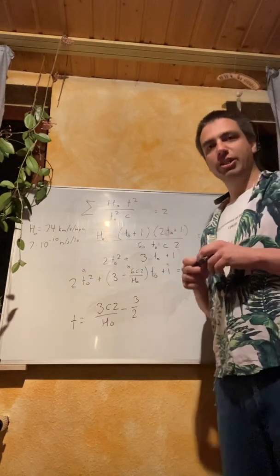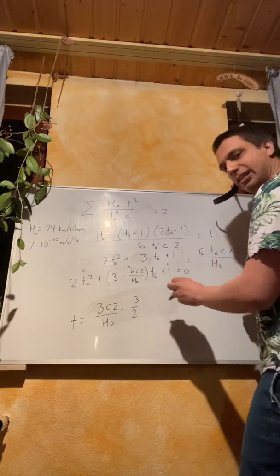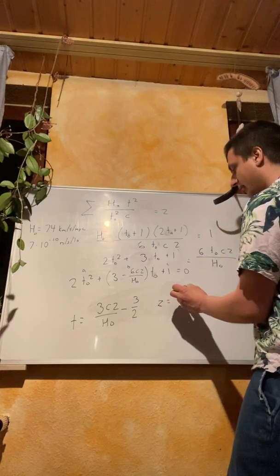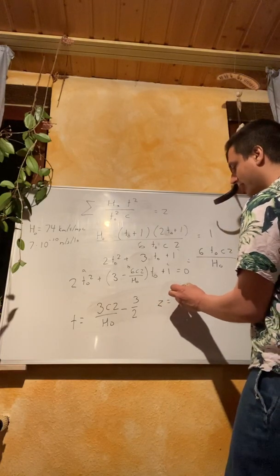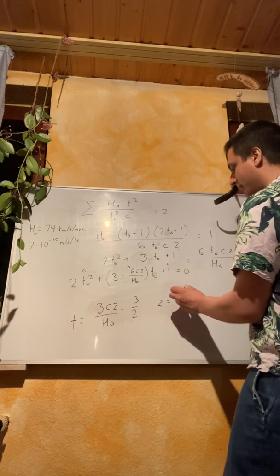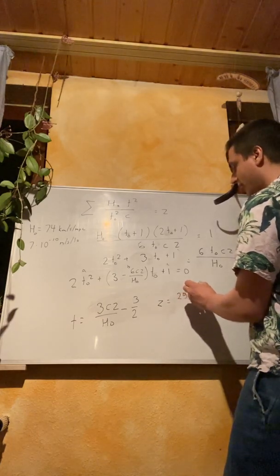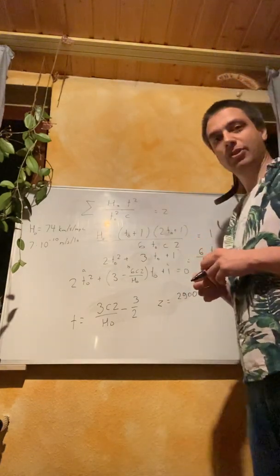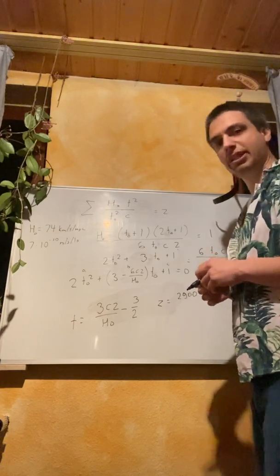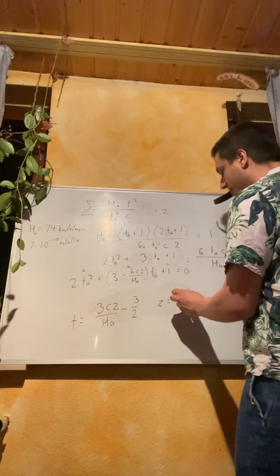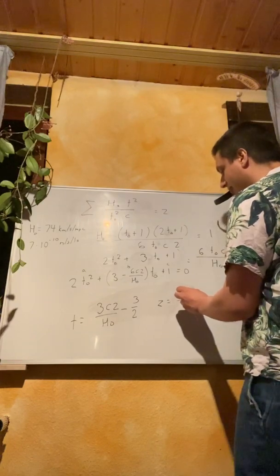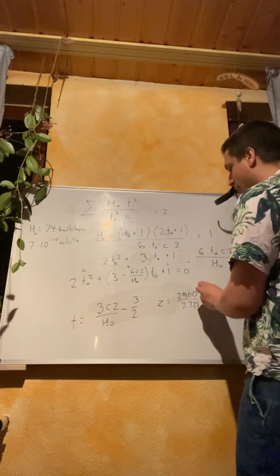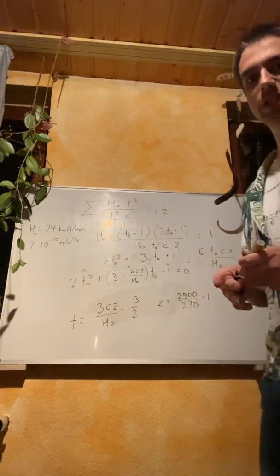So what value are we going to put in here for Z? Basically for Z, we calculate the ratio between the initial temperature of the universe when decoupling happened, which is 2900 Kelvin and the present temperature of the universe, 2.725 Kelvin minus one. So that's our redshift.